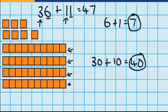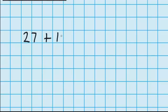Now let's try a question where we don't have any materials. This time I've got 27 lollies and I want to add 12 more. 27 is made up of 2 tens and 7 ones, and 12 is made up of 1 ten and 2 ones. So let's add the 1's together first — here are my 7 ones and I need to add these 2 ones. 7 plus 2 equals 9.